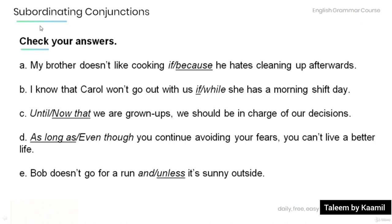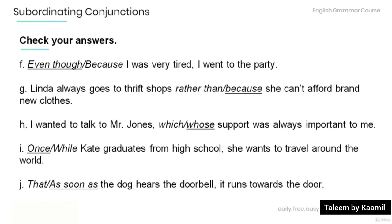And now let's check your answers. A: 'My brother doesn't like cooking because he hates cleaning up afterwards.' B: 'I know that Carol won't go out with us if she has a morning shift day.' C: 'Now that we are grown-ups, we should be in charge of our decisions.' D: 'As long as you continue avoiding your fears, you can't live a better life.' E: 'Bob doesn't go for a run unless it's sunny outside.' F: 'Even though I was tired, I went to the party.' G: 'Linda always goes to thrift shops because she can't afford brand new clothes.' H: 'I wanted to talk to Mr. Johns, whose support was always important to me.' I: 'Once Kate graduates from high school, she wants to travel around the world.' J: 'As soon as the dog hears the doorbell, it runs towards the door.'